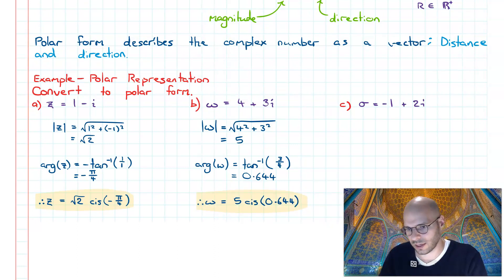Final one, we have sigma. Sigma is minus one plus two i. Converting this to polar form exactly like we've done all the previous ones: minus one squared plus two squared, which gives us a value of root five. Next, our argument.